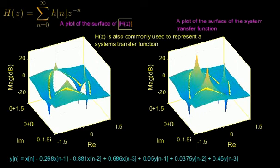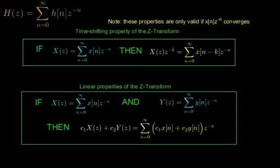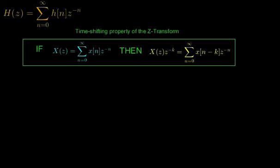To start we need to appreciate the properties of time shifting and linearity associated with the Z transform. It's important to note that these properties are only valid when the resulting series converge. You can find a thorough proof of these properties elsewhere, but I'm going to validate the first one by way of practical example as it tends to cause some slight confusion.